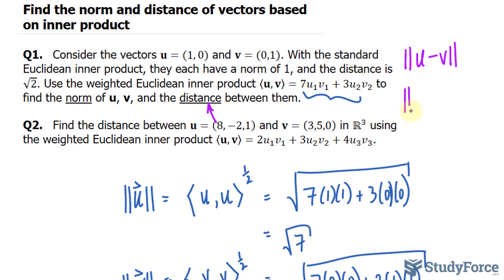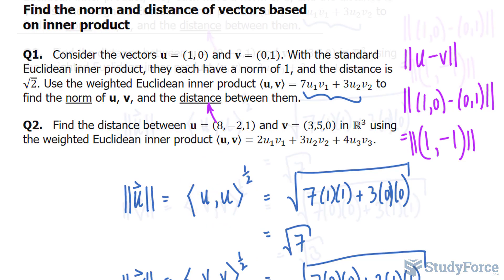So, we have the components of u, 1 and 0, minus the components of v, 0 and 1. That's equal to 1 minus 0 is 1, and 0 minus 1 is negative 1. So, pretend that this is the resultant vector after subtracting the two. And we'll do the same thing as we did here for this resultant vector.